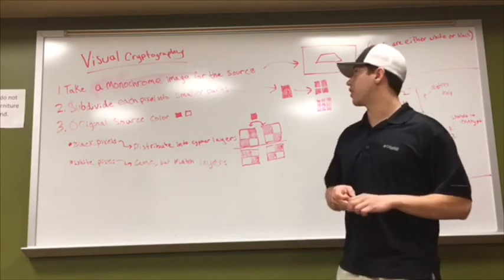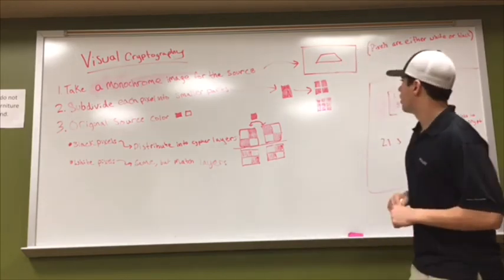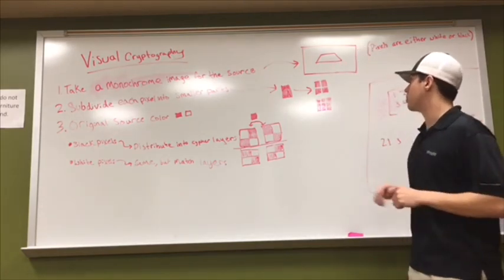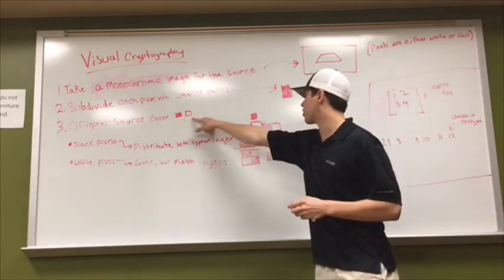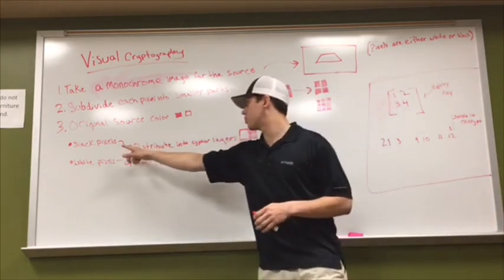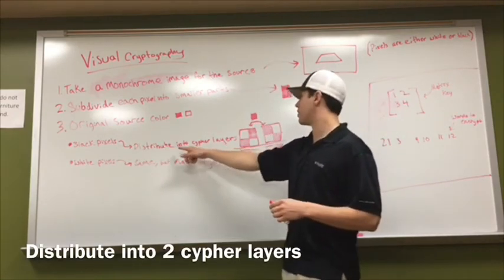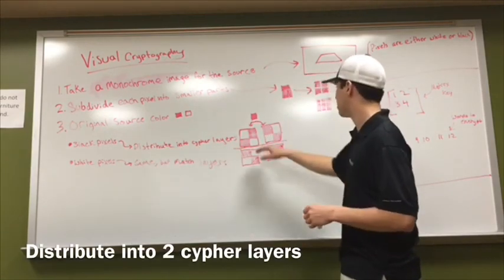After the pixels are subdivided into smaller parts, they're going to be black or white. For the black pixels, we're going to distribute them into two cipher layers, basically like this. This would be layer one, this would be layer two.